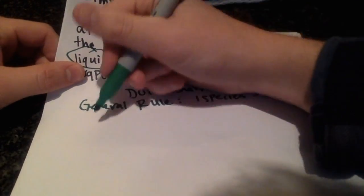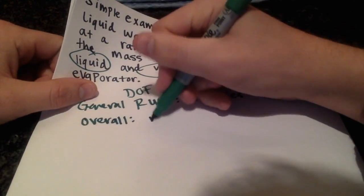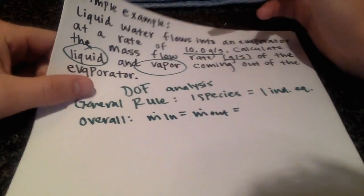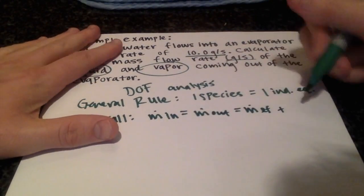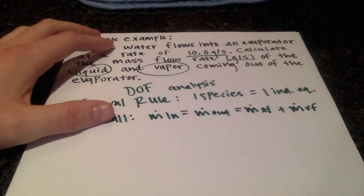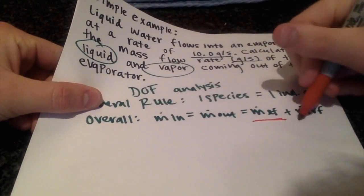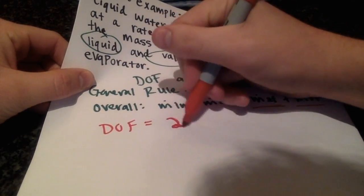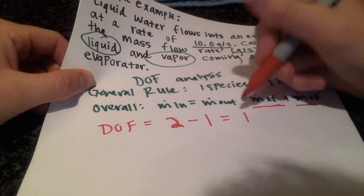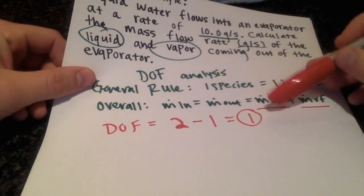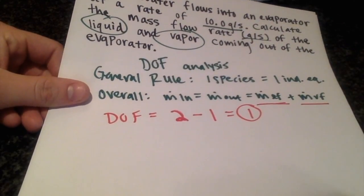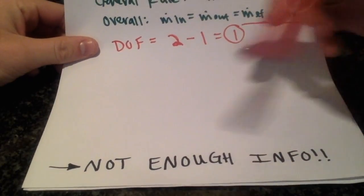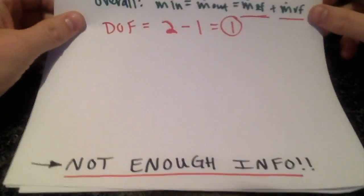Our overall balance — the only one we can write — sets mass in equal to mass out: liquid water in equals liquid final plus vapor final. Those are our two unknowns. The degrees of freedom equals the number of unknowns (two) minus the number of independent equations (one), giving a degree of freedom of one. That means one additional piece of information must be given for us to solve this problem.